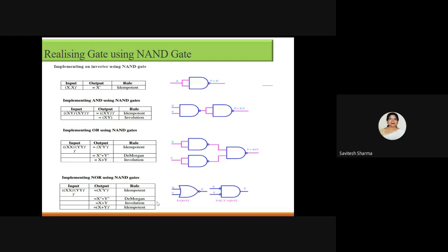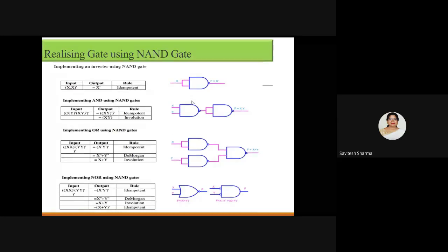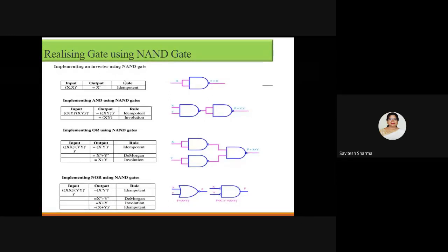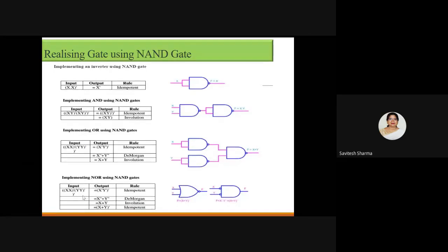If you have a question in the exam — prove that NAND and NOR gates are universal gates — you will write: NAND gate is called a universal gate because any gate can be implemented using this gate. Then you prove it by showing this table and the gate realization. That way your answer will be complete.